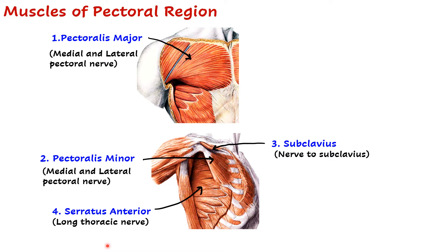Serratus anterior is supplied by the long thoracic nerve, which arises directly from the roots of the brachial plexus. You are often asked its root value, which is C5, C6, C7.